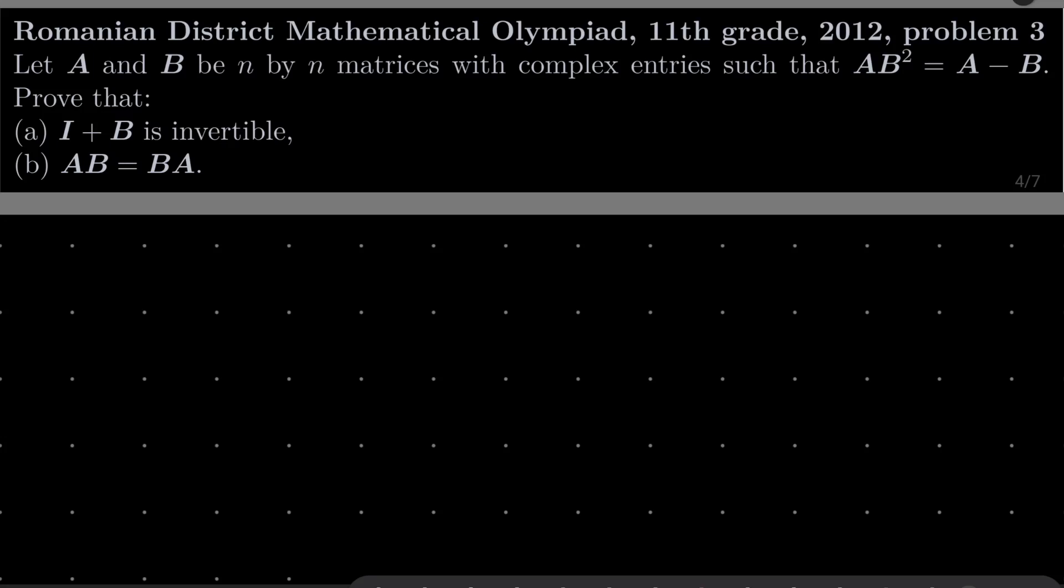Let A and B be n by n matrices with complex entries such that AB squared equals A minus B. We wish to prove two things. First, the identity matrix plus B is invertible and moreover matrices A and B commute with each other, that is AB equals BA.